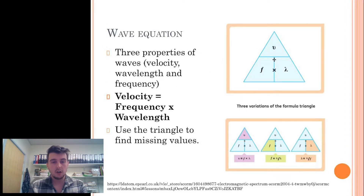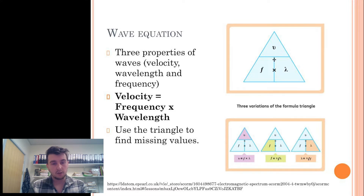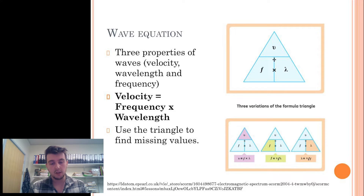There are three properties of waves: velocity, wavelength, and frequency, which are mathematically related by the equation velocity equals frequency times wavelength. The easiest way to write this equation is in a triangle, as shown here. To calculate a missing value when you have two known values, cover the missing value and use the method provided to calculate it, as shown in the second diagram here.